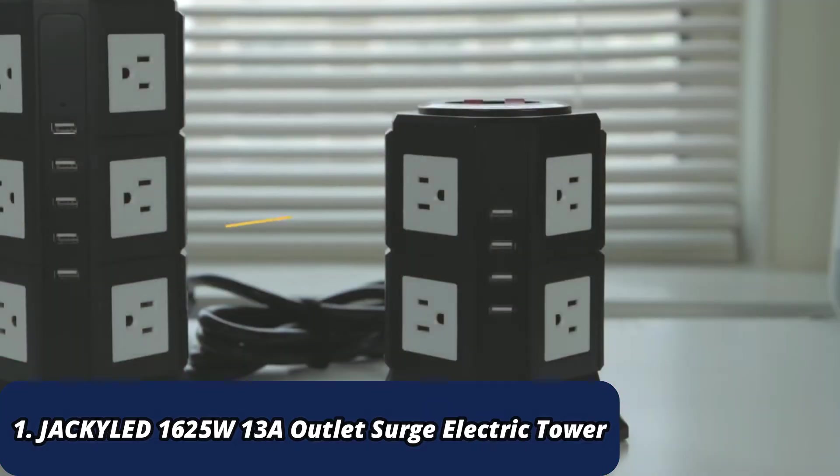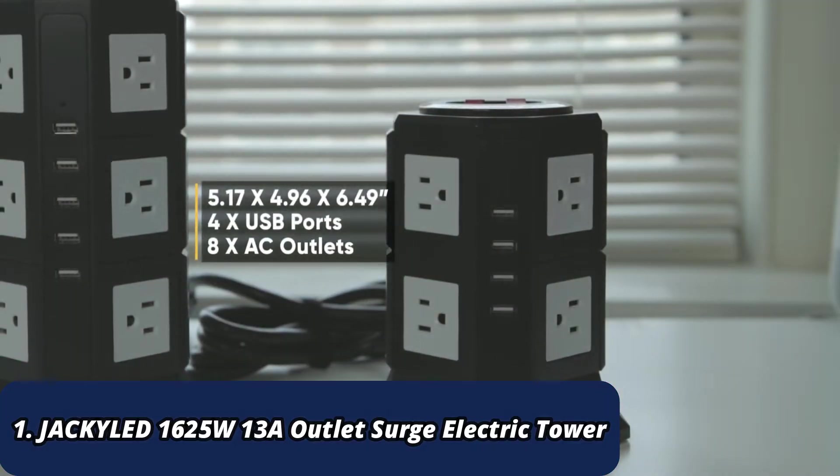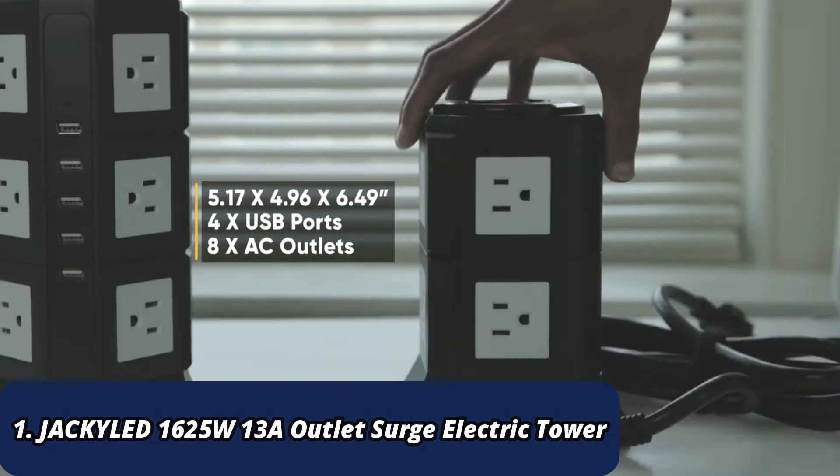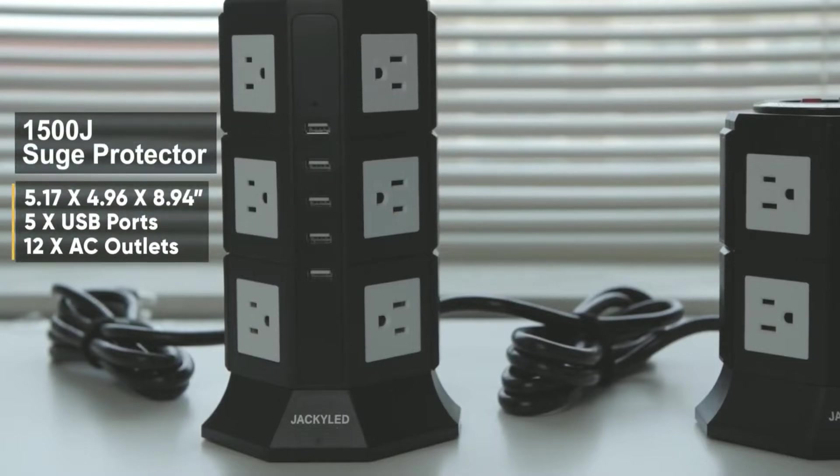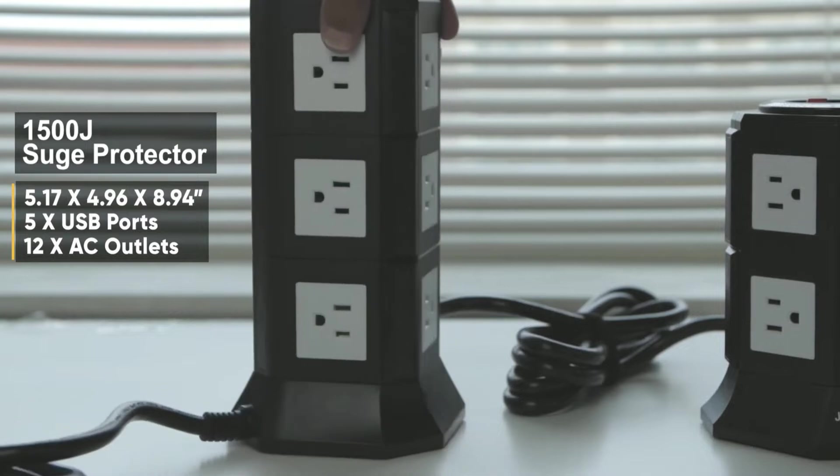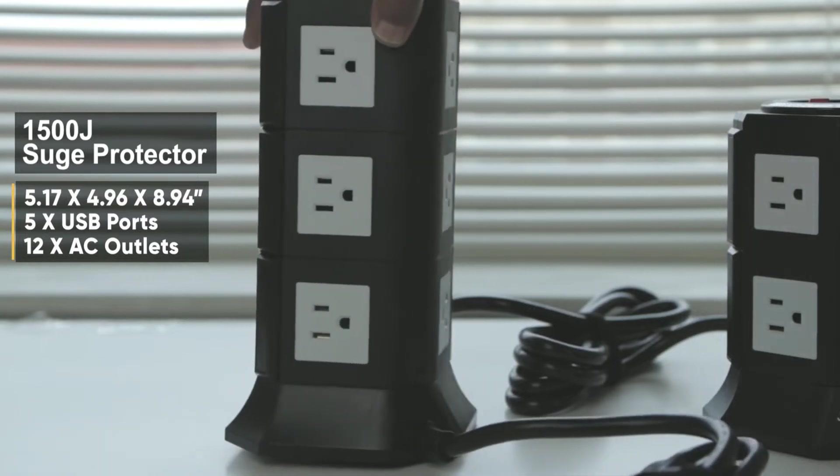The smaller tower is 5.17 by 4.96 by 6.49 inches and has 4 USB ports and 8 AC outlets. The larger tower is 5.17 by 4.96 by 8.94 inches and has 5 USB ports and 12 AC outlets.